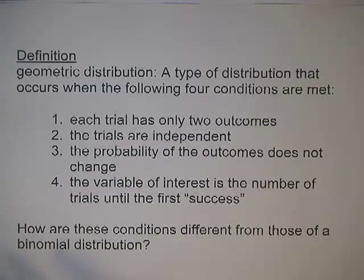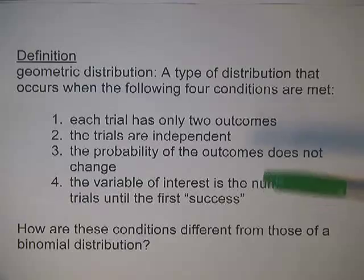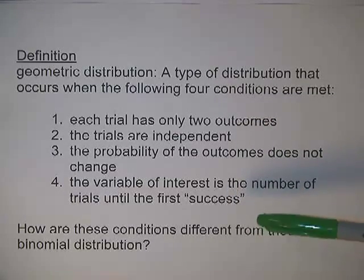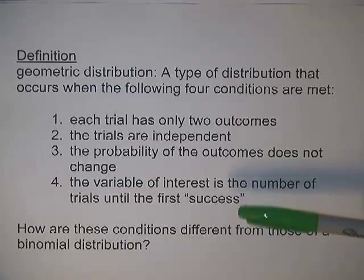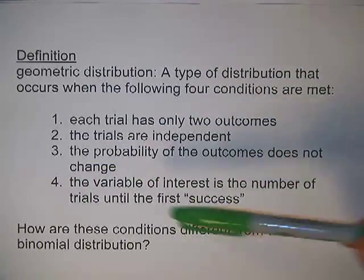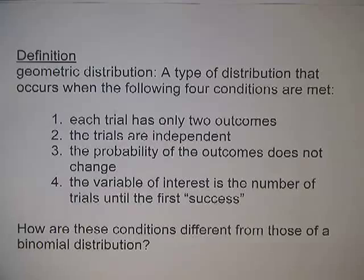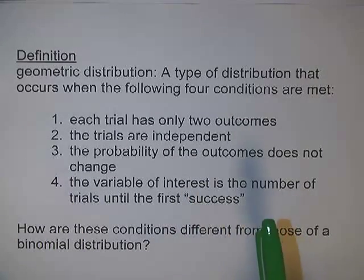If you've studied the binomial distribution, how are these conditions different from those of a binomial distribution? Well, they're pretty similar, but really there are two differences. The first major difference is number four. The variable of interest is the number of trials until the first success. In the binomial distribution, the variable of interest is the number of successes.